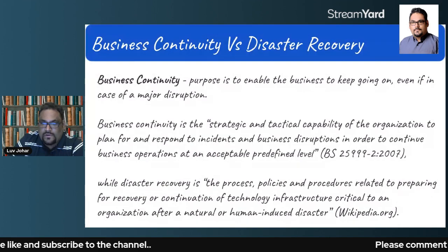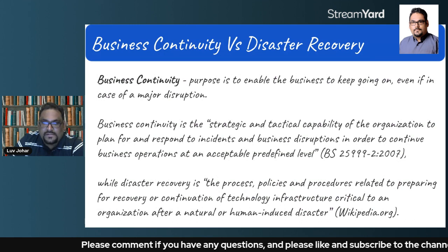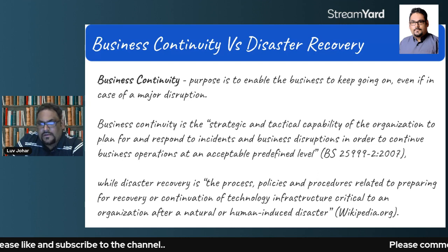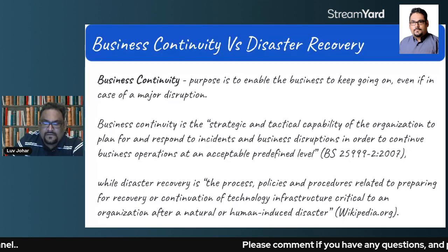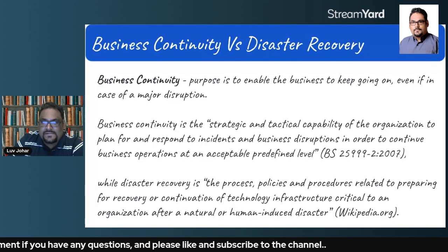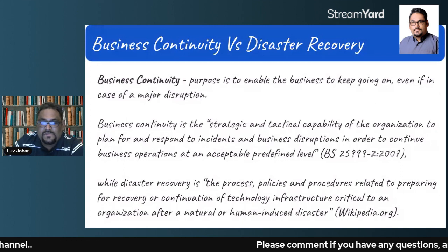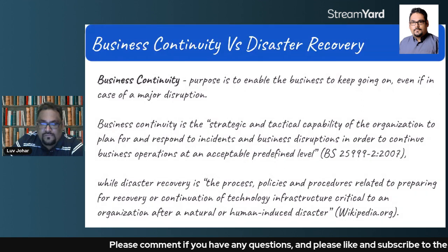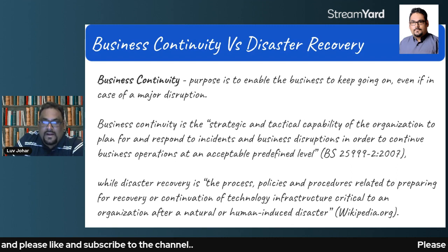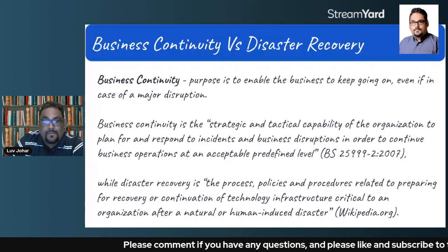Business continuity is a strategic and tactical capability of any organization to plan for and respond to incidents and business disruptions in order to continue business operations at an acceptable, predefined level. What does 'acceptable predefined level' mean? It means the entire business, all functions, all departments, could not be mobilized at the same level. So you have to define the critical business functions — the critical areas you want to back up and restore as a first priority, deciding which parts of the business will be up and which parts might remain down for a while.